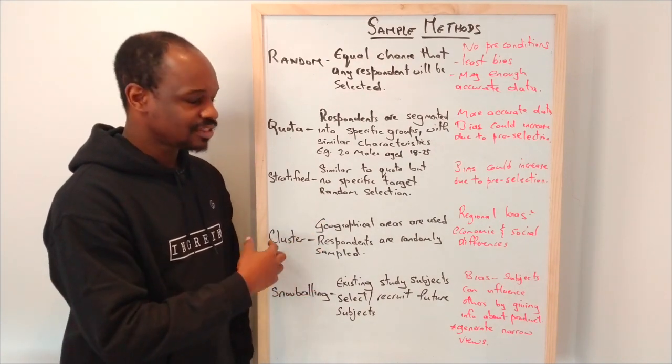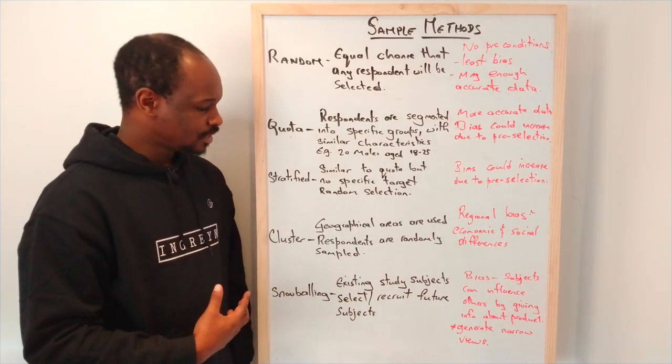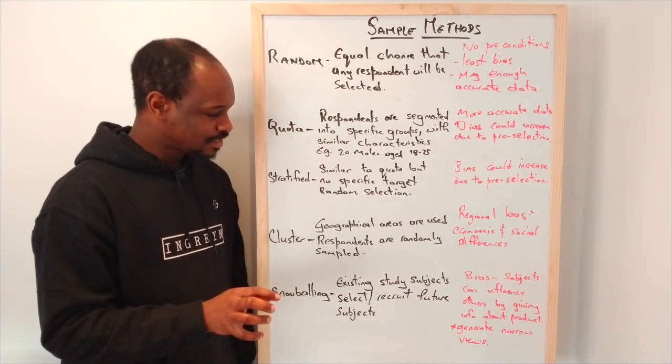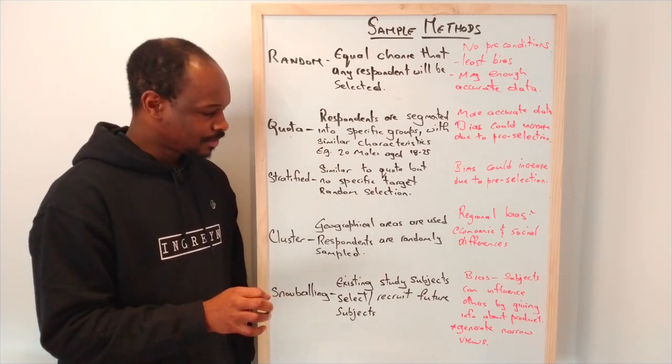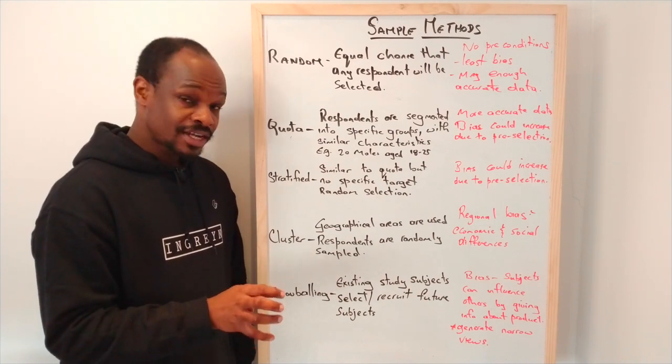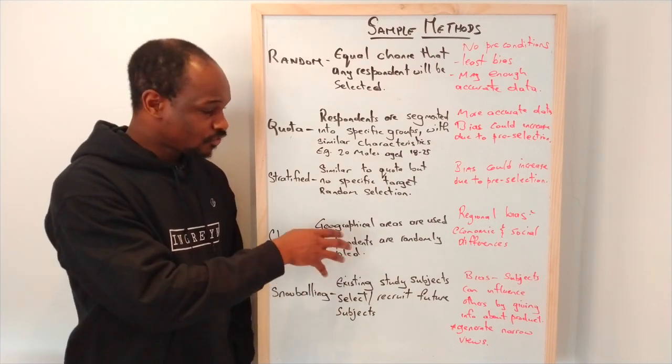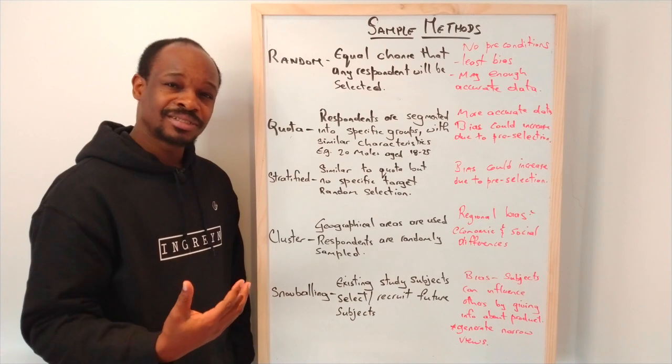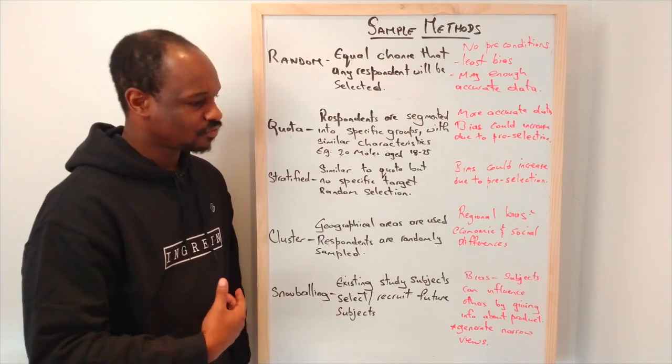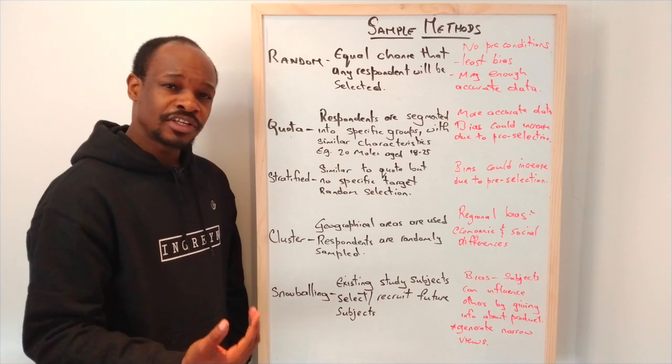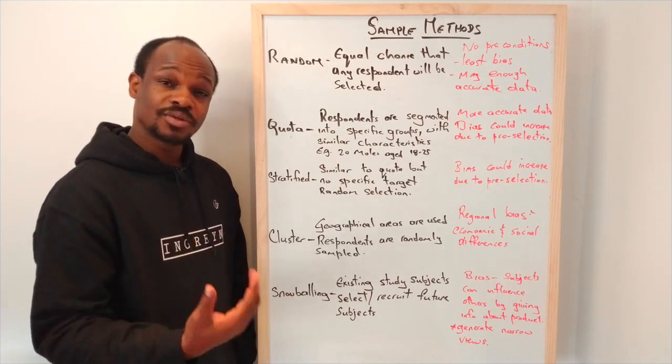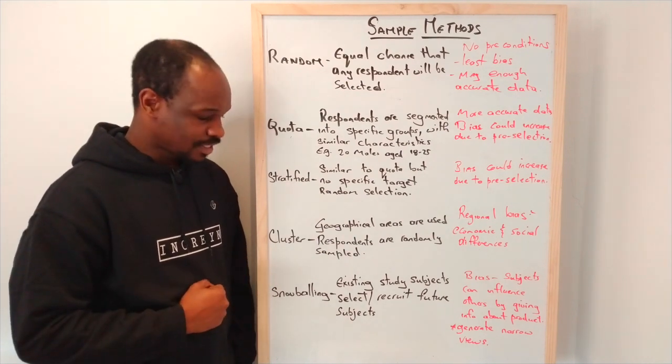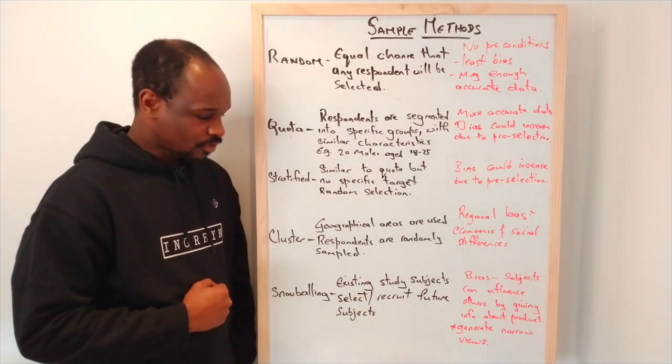Cluster is about the geographical area. This is where we would now select respondents for our sampling, so respondents are randomly selected from the geographical setup. The drawback to this is that there could be regional bias if there are differences in terms of economic and social conditions.